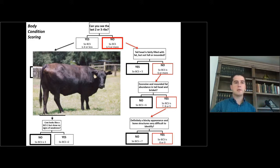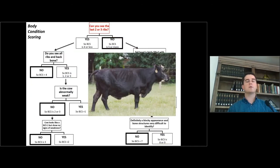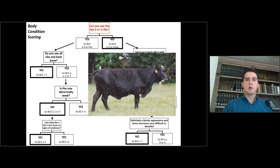You will notice that this flowchart uses one-point increments on body condition score. And sometimes we're going to have examples where the cow does not fall exactly into one-point increments. We might have a cow that is not on a body condition score 4 or a 5 — she's actually somewhere in between, like a 4 and a half. So let's do a second example: can you see the last 2 to 3 ribs? Yes, you can — so you know she's on a body condition score 4 or less.